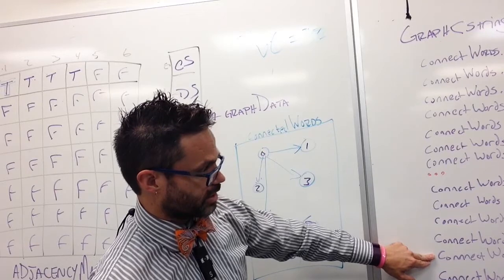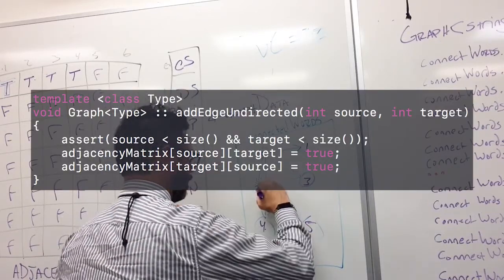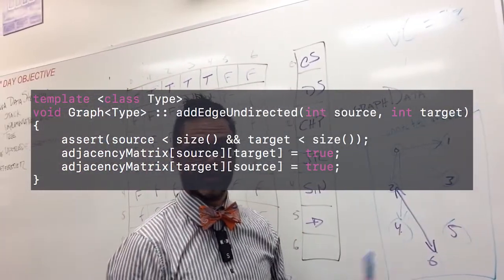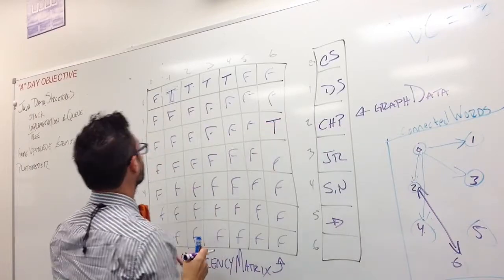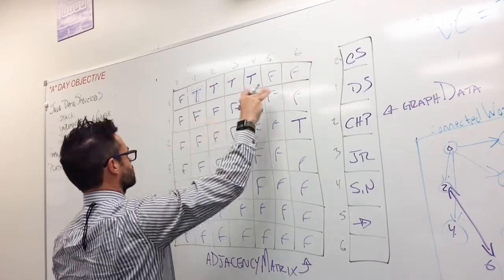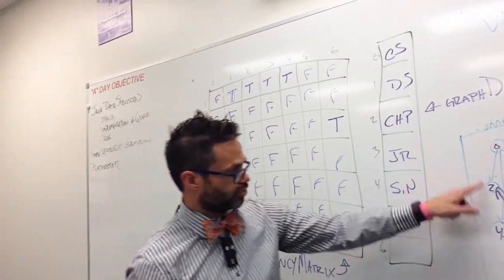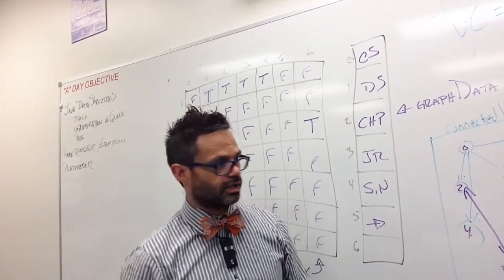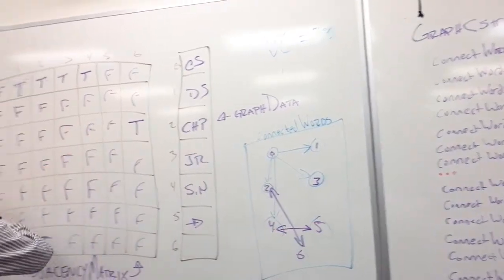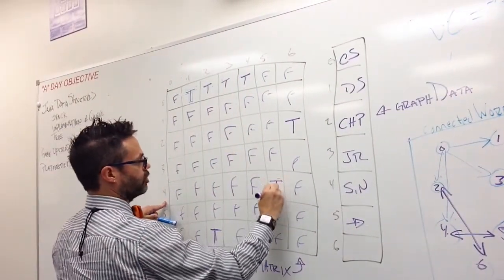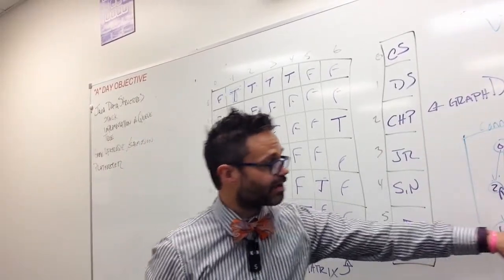We're going to make a new undirected connection on nodes 2 to 6 — a both-way connection so they both see each other. Going to row 2, column 6, and setting that to true. Then going to row 6, column 2, and making that one also true. Now we add an undirected edge between 4 and 5. We go to row 4, column 5, and change that to true. Then its inverse — row 5, column 4 — is also set to true. Both directions can communicate back and forth.